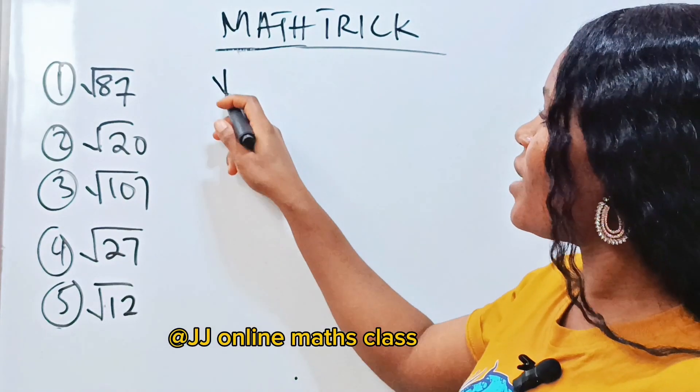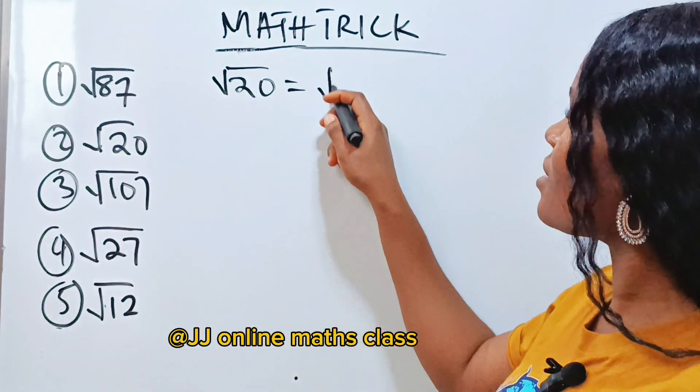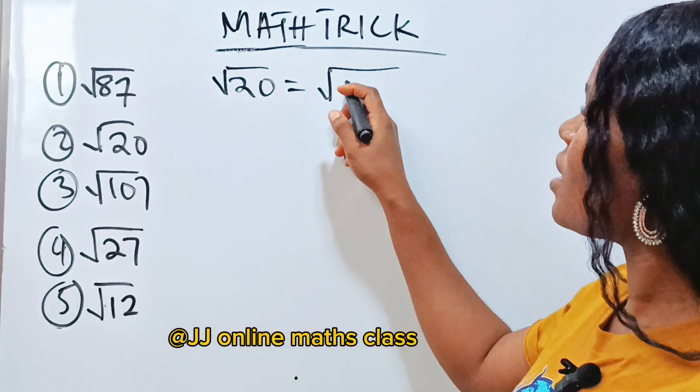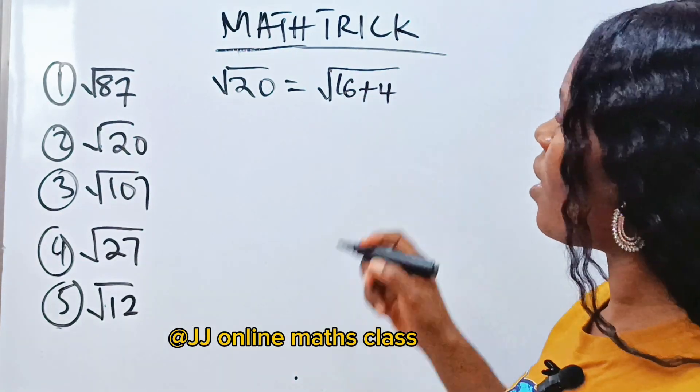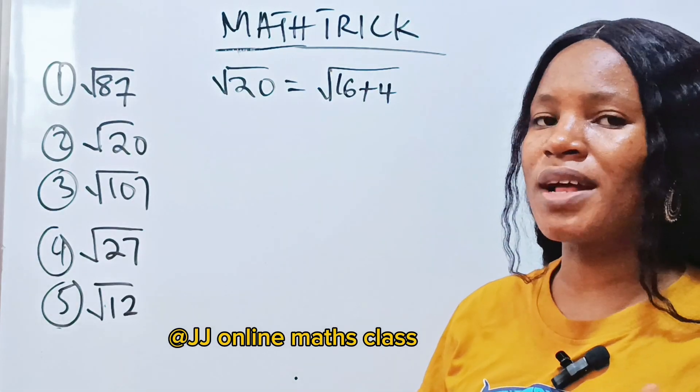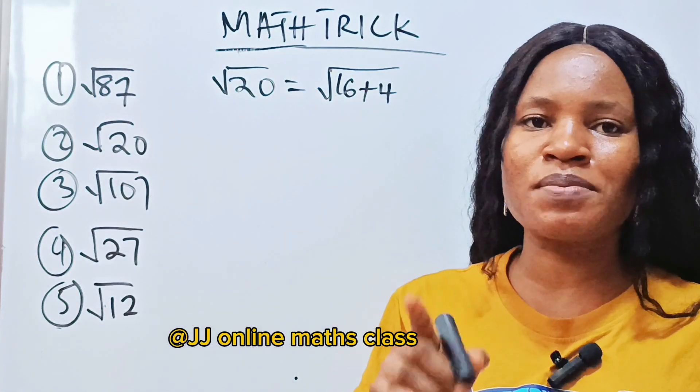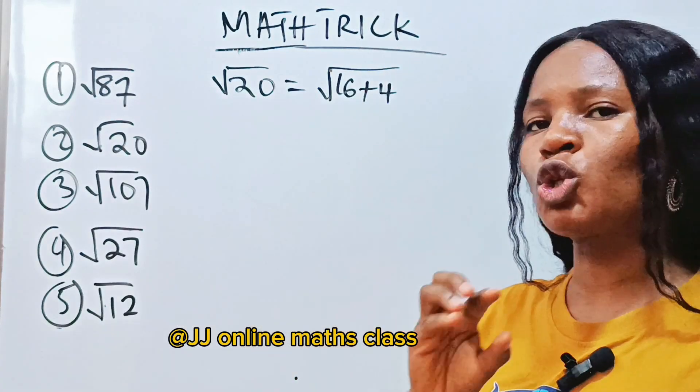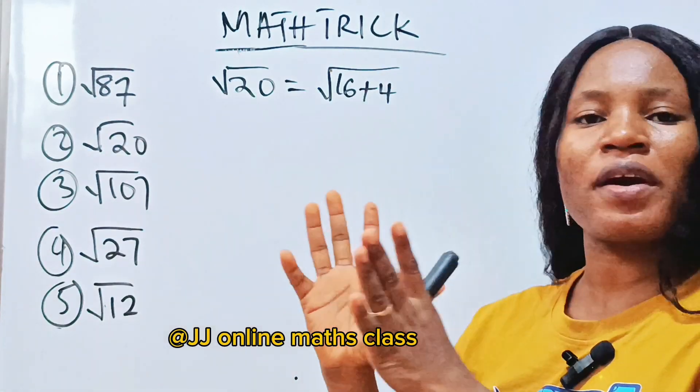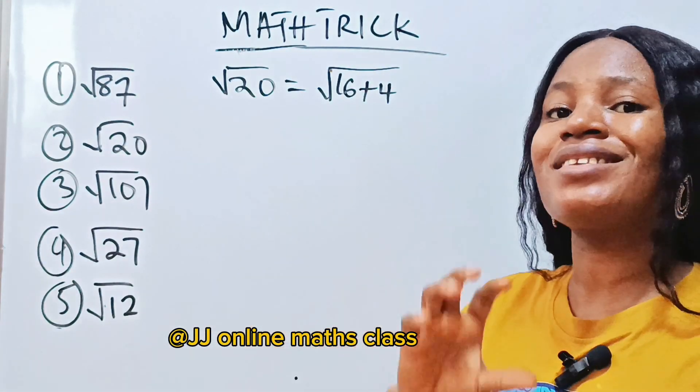We know that √20 is the same thing as square root of what? This same thing as 16 plus 4. Yes, it's the same thing as 16 plus 4. Now let me clear you. For you to be able to use this trick, you should be able to know your perfect squares very well and their square roots.